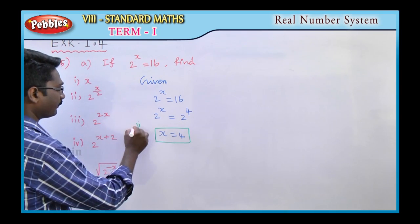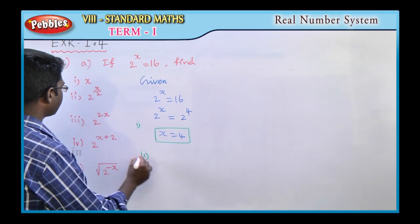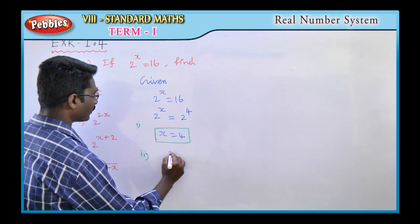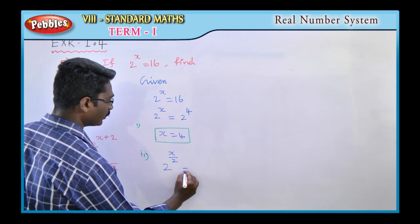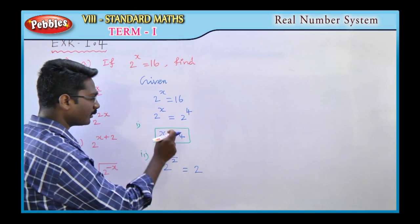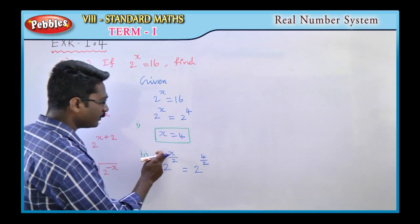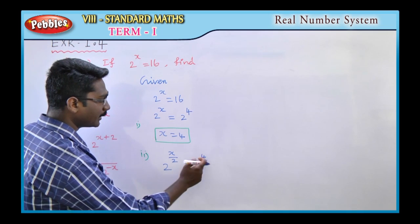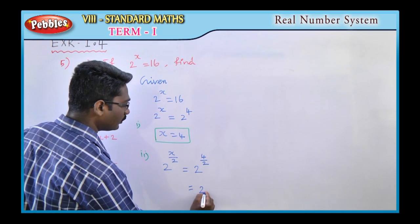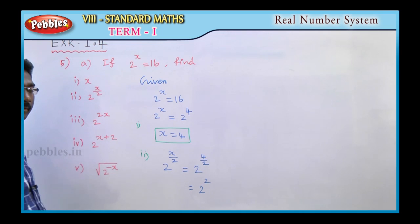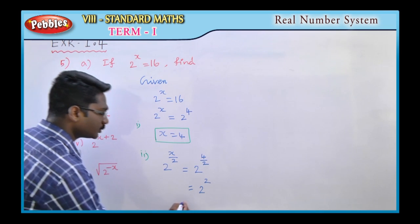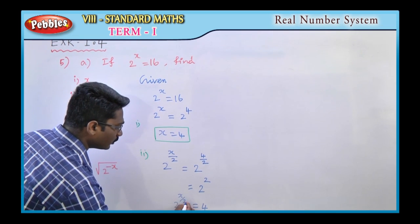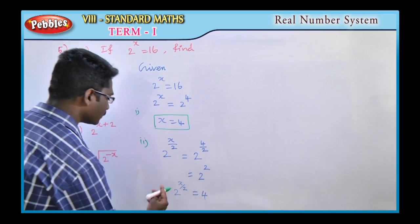Second part: find 2 power x by 2. Substitute x equals 4: 2 power x by 2 is equal to 2 power 4 by 2, which is 2 power 2. So the answer is 4. The second question answer is 4.